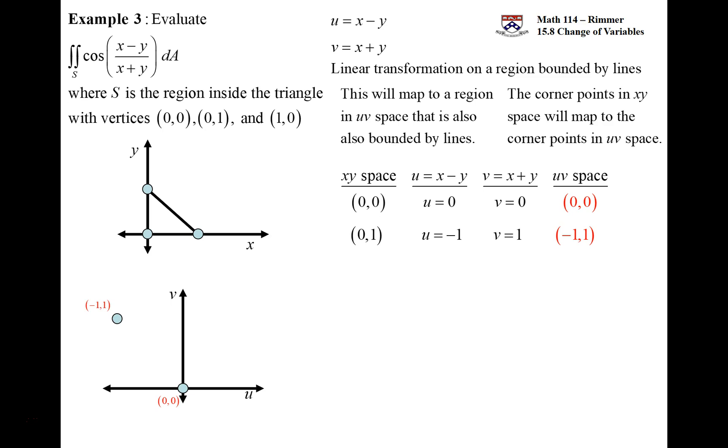Finally we have 1 on the x-axis. When I subtract y from x, I get 1. And when I add y and x, I get 1. So the point (1,0) on the x-axis gets transformed to be the point (1,1) in uv space. From what we said above, we just connect these points with lines. It's only because we had a linear transformation on a region that was bounded by lines that we can do this.